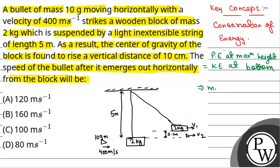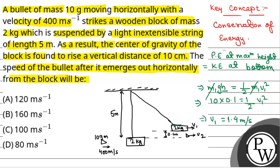Potential energy at maximum height will be equal to M1 times G times H, where M1 is the mass of the wooden block and H is the vertical height of 0.1 meter. That will be equal to half M1 times V1 squared. Cancelling M1 from both sides, with G equal to 10 meter per second squared and H equal to 0.1 meter, we get half times V1 squared, and solving for V1 gives V1 equal to 1.4 meter per second.